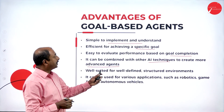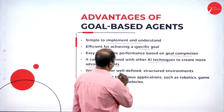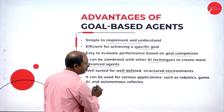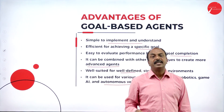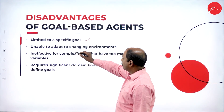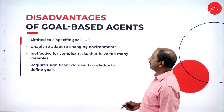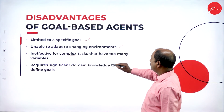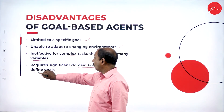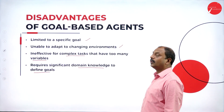Goal based agents can be combined with other techniques for different applications and goals. They are well suited for well-defined, structured environments and can be used for applications such as robotics, gaming AI, and autonomous vehicles. For the drawbacks, these agents are limited to specific goals and unable to adapt to changing environments — even though adaptation is mentioned, practically it is difficult. They are ineffective for complex tasks that have too many variables, and they require significant domain knowledge to define goals properly.